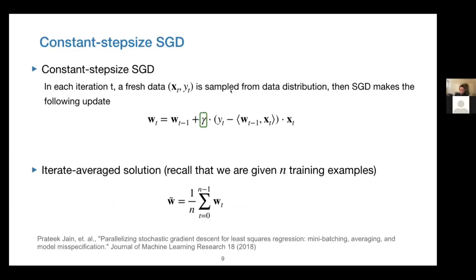Let me give a quick review of constant step size SGD. At each iteration, starting from W_{t-1}, it takes one step along the negative direction of the stochastic gradient using a constant step size gamma. This process is repeated many times, and in the end we average the iterates W_t from t=0 to N-1. We define this average iterate as W-bar. This algorithm has been analyzed in several papers including the paper by Ge and Oh, studying excess risk for squared regression — but only in the classical setting where dimension D is fixed.